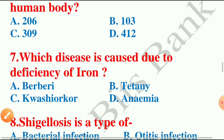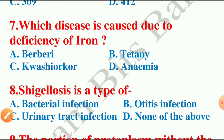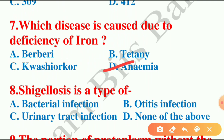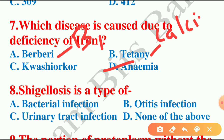Next question: which disease is caused due to deficiency of iron? The options are beriberi, tetany, anemia, or kwashiorkor. The answer is anemia — anemia is caused due to deficiency of iron. Beriberi is caused due to deficiency of vitamin B1, tetany is caused due to deficiency of calcium, and kwashiorkor is caused due to deficiency of protein.